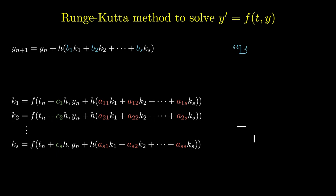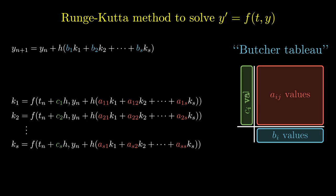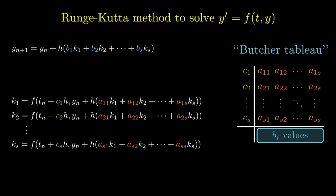An easy way to express the values of a, b, and c is to arrange them in tabular form known as a Butcher tableau. Here we have four regions. The upper right region is where we write the a values, the c values are written in the upper left region, and the b values are written in the lower right region.